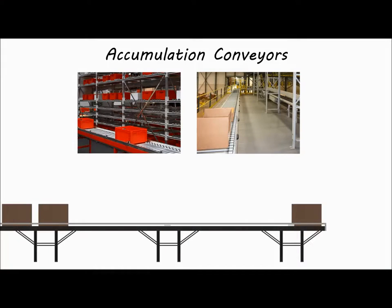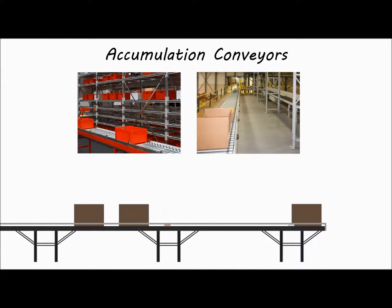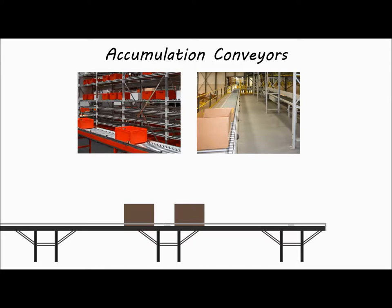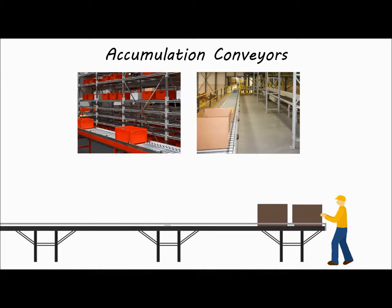Accumulation conveyors move loads from point A to point B, allowing them to accumulate when necessary to allow time for equipment or other material handling resources to become available down the line. Once these resources become available, the system gives a signal to release the next queue of products.